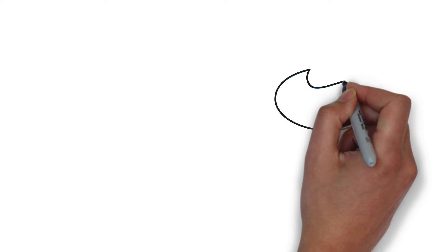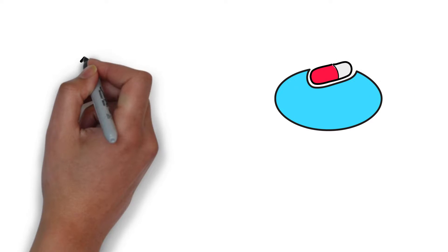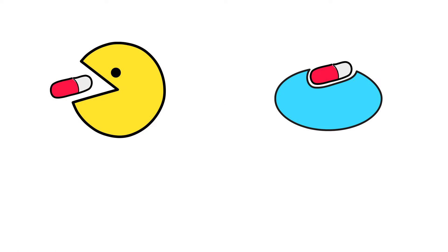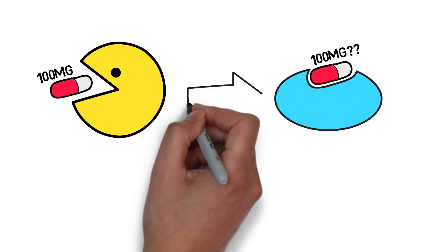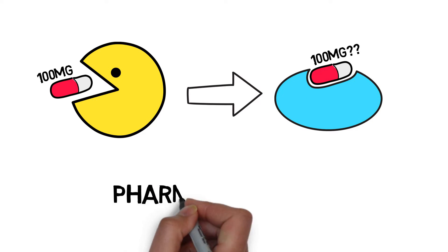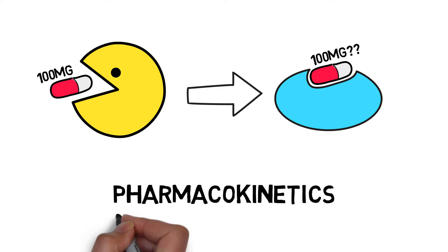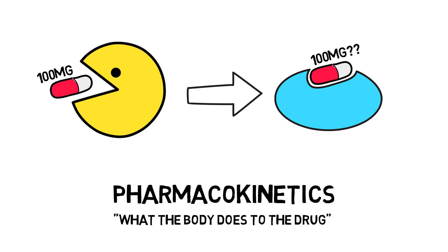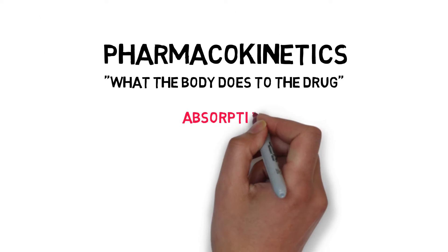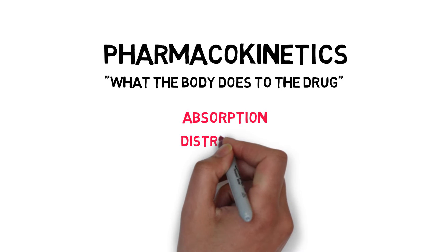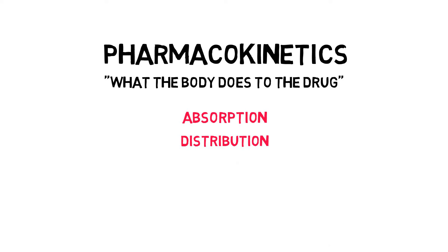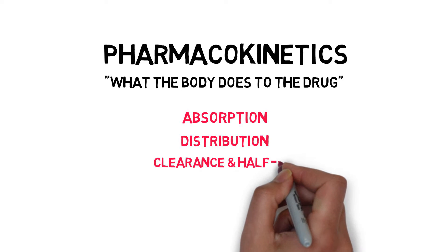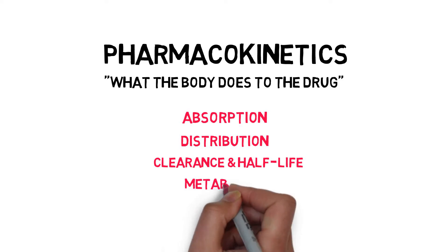Unfortunately for us, the patient isn't taking this drug directly on their beta-1 receptor, but usually through the mouth. You can imagine that the dose the patient takes isn't directly corresponding with the dose on the receptors — the drug undergoes some changes. This is pharmacokinetics: not what the drug will do to the body, but what the body does to the drug. We'll talk about this step by step, starting with how the drug gets into the bloodstream in absorption, how it is distributed throughout the body in distribution, and how it is cleared by the body either through metabolism, through excretion, or by a combination of both.